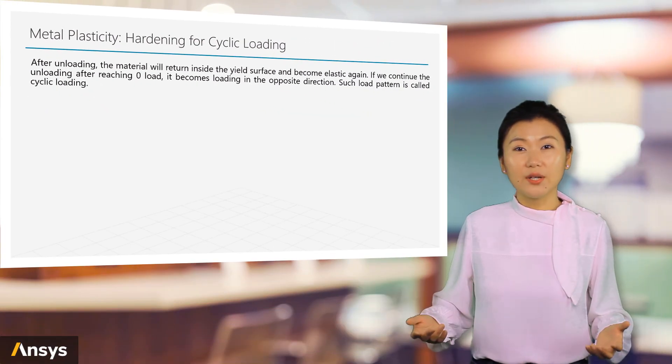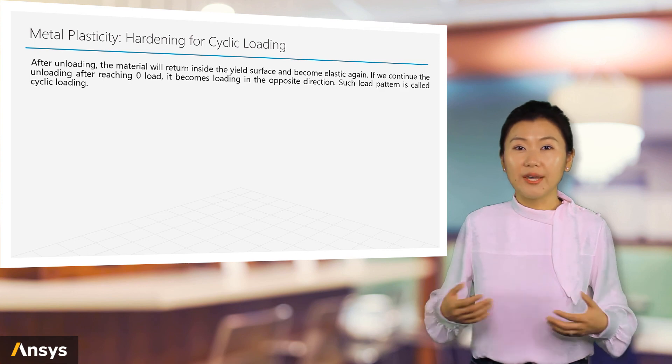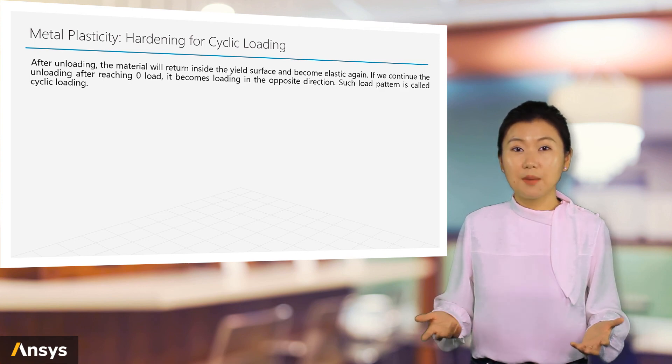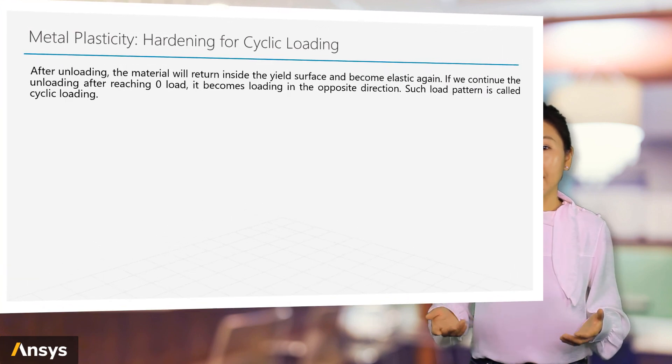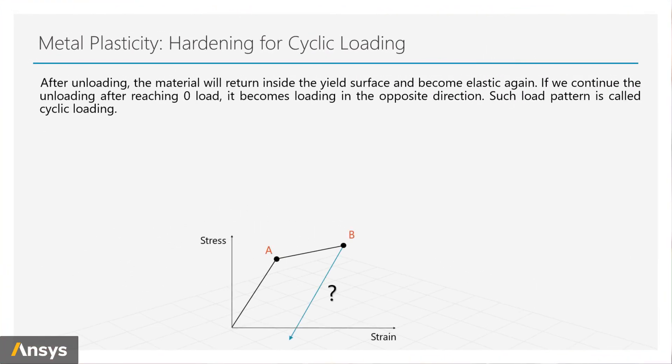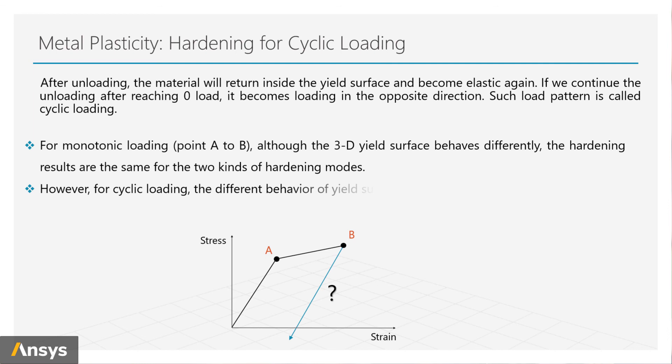Once the unloading starts, the material will instantly return to inside of the yield surface and become elastic. If we continue the unloading and make it past zero axis, it basically converts to loading in the opposite direction. Say initially the material is in tension, now it becomes compression. The repetition of switching between loading in different directions forms a cyclic loading.